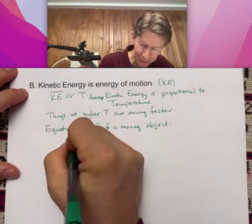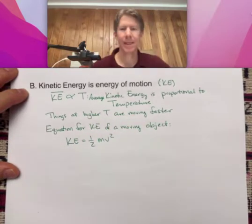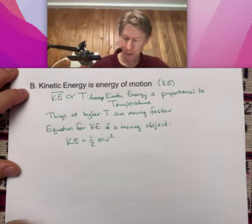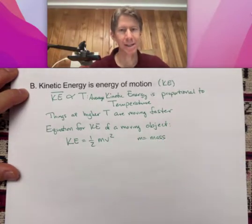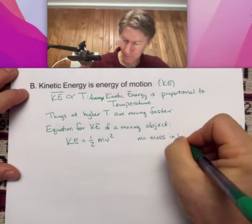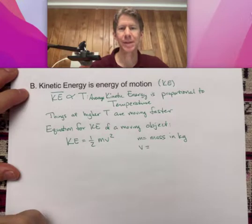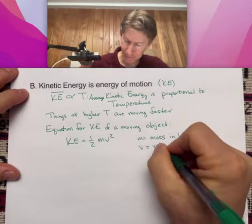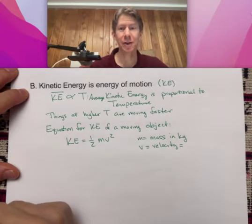Kinetic energy, KE, equals one-half mv squared. Where m is our mass, again in kilograms. And v, this is a lowercase v, is velocity. And velocity is a fancy word for speed.